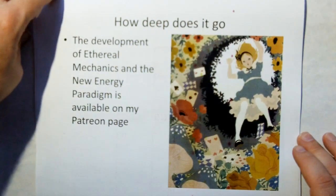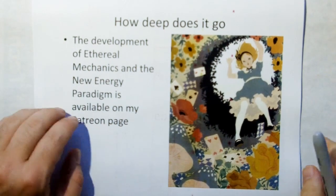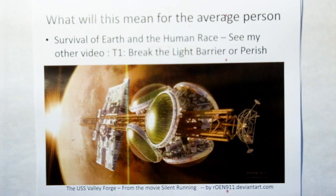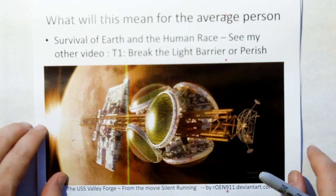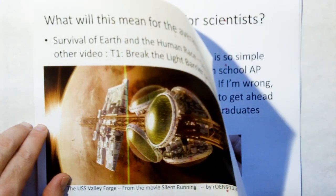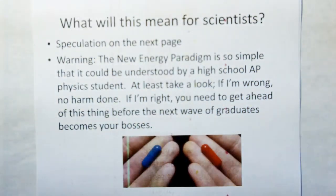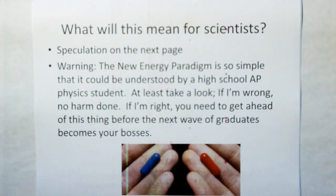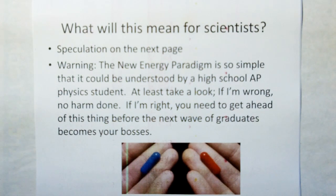So how deep does the rabbit hole go? Well, the development of ethereal mechanics and new energy paradigm is available only on the Patreon site, but there are videos available if you look at the T0 trailer of generally where everything came from and you can check out the T0 trailer which gives you an overview of this. So what will this mean for the average person? The survival of the human race and the earth. And you can see in my other video, T1, break the light barrier or perish. Which basically says unless we can break the light barrier by a factor of 500, there is no way the human race is going to persist and survive. And what will this mean for scientists? Well, I'm going to give you the speculation on the next page, but I'm going to give you a warning. The new energy paradigm is so simple that it could be understood by a high school advanced physics student or advanced placement physics student. At least take a look. If I'm wrong, there's no harm done.